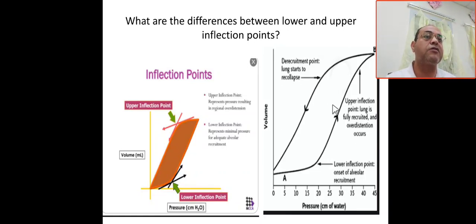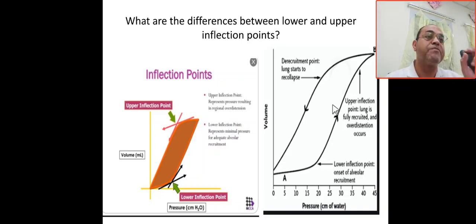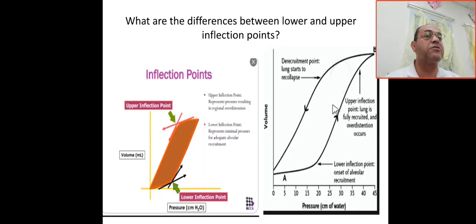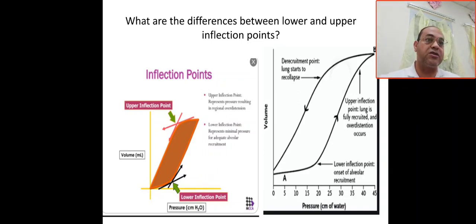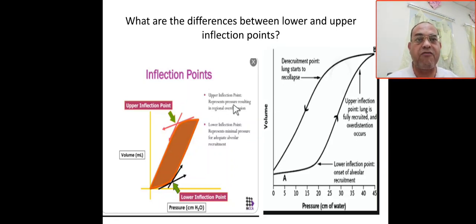The upper inflection point is where the lung is fully recruited and overdistended. Even if you give more pressure, it will not give you any additional volume because the lung is already fully recruited. Giving further pressure may harm the patient, leading to barotrauma due to overdistension.